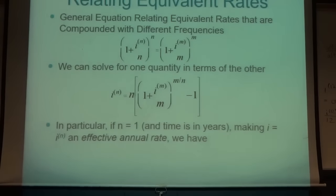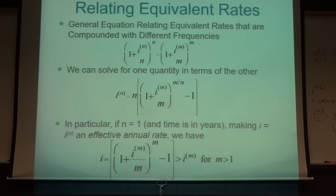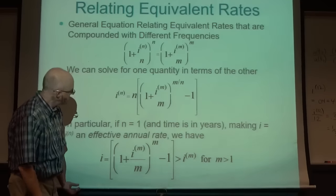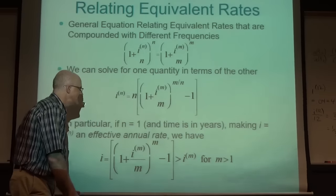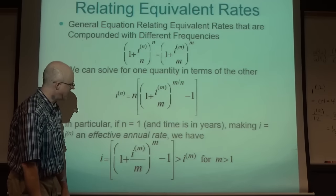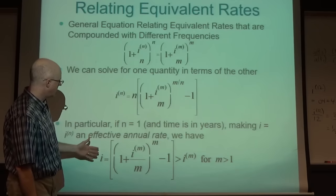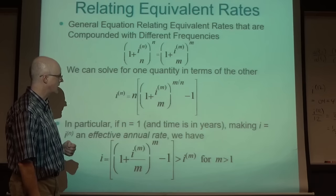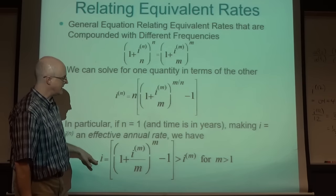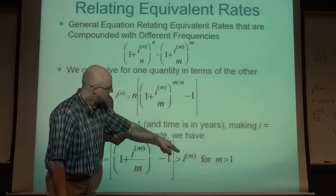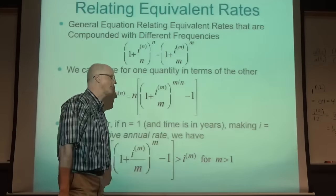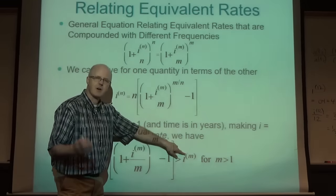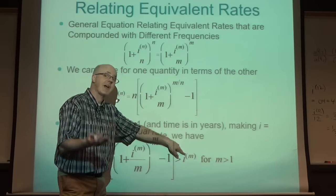Often you want to use this equation with N=1 to give what's called an effective annual rate. Given i_M (the nominal rate compounded M times per year), with N=1 the equation simplifies. The effective annual rate when compounding more than once per year will always be more than the nominal rate - because your money grows by more than the nominal rate. The nominal rate is 'in name only'; it's not measuring what you actually earn.